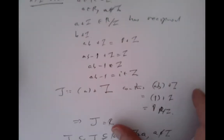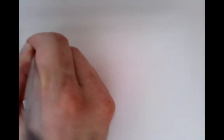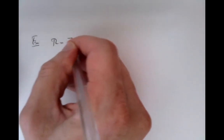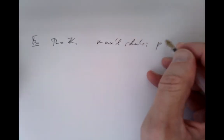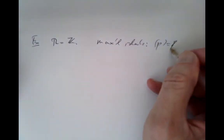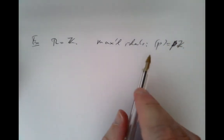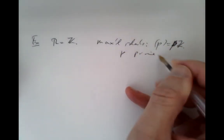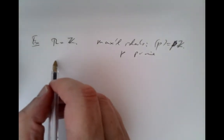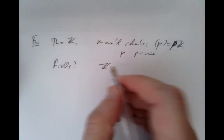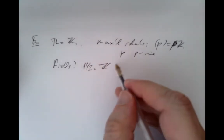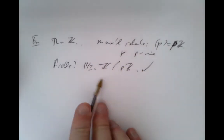Let's see some examples of constructing fields. Starting with the integers: the maximal ideals are exactly the multiples of primes — pZ for positive prime integers. When we quotient out, we get Z mod pZ, which are the fields we've already seen before.